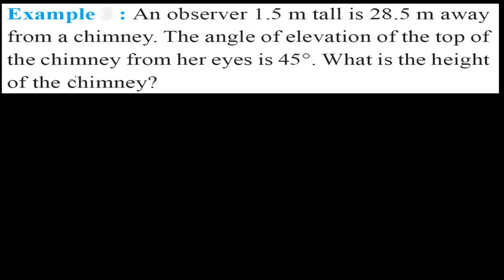Welcome friends, once again in another trigonometric application word problem. The question says: an observer 1.5 meters tall is 28.5 meters away from a chimney. The angle of elevation of the top of the chimney from her eyes is 45 degrees. What is the height of the chimney?